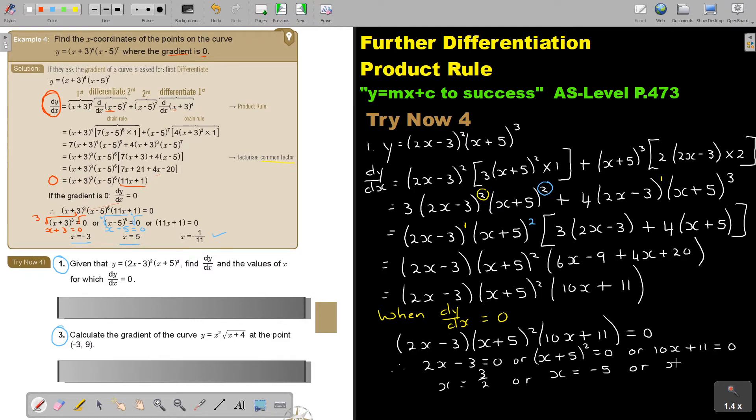And this guy's x is equal to negative 11, 7 over 10. So that will then be my final answers. That is where every time the gradient will be zero.